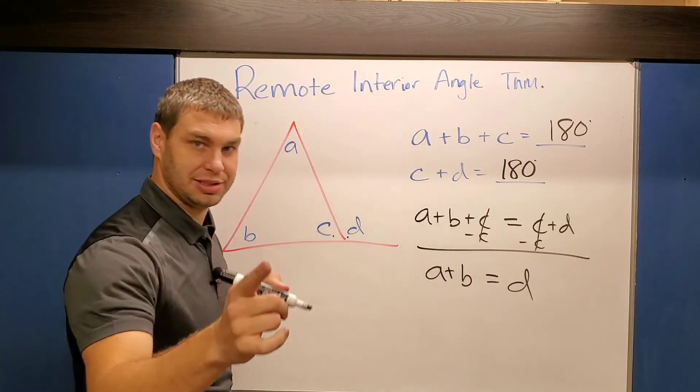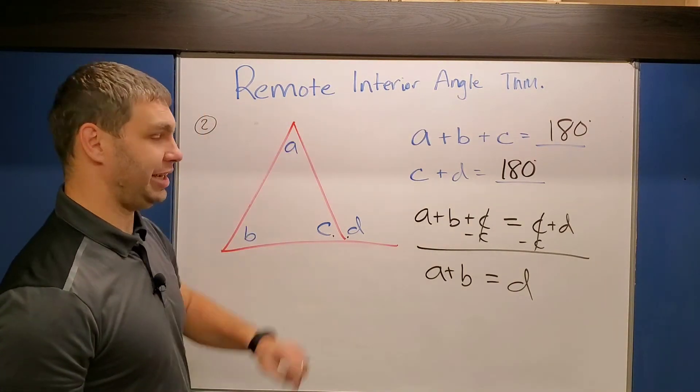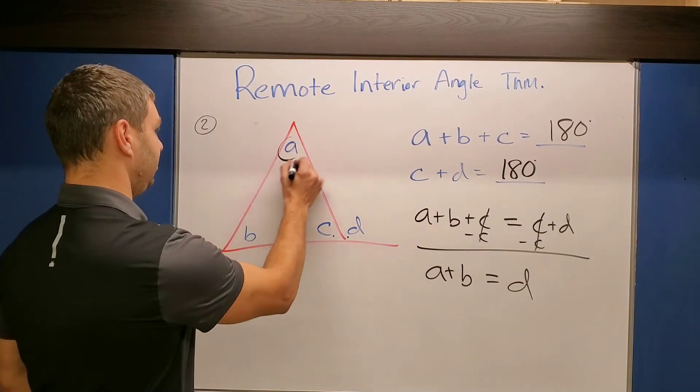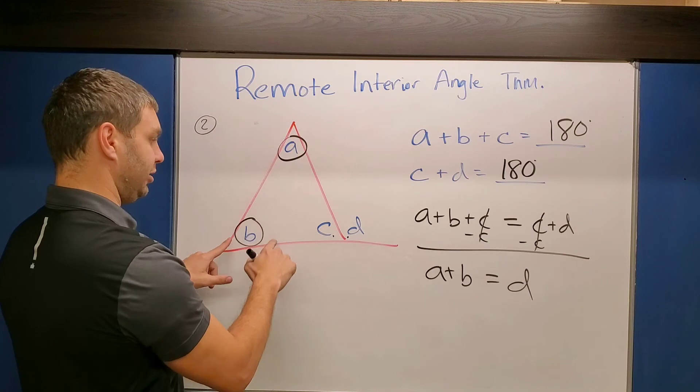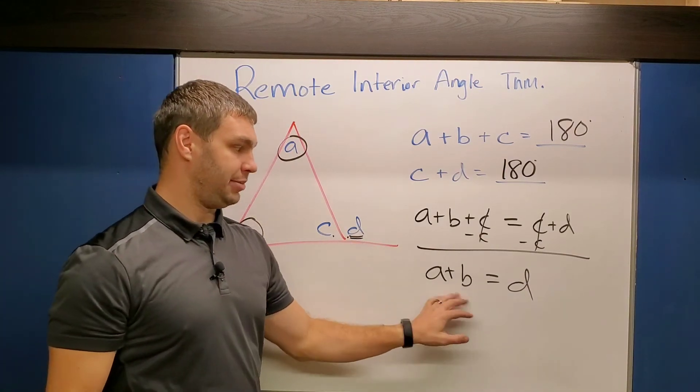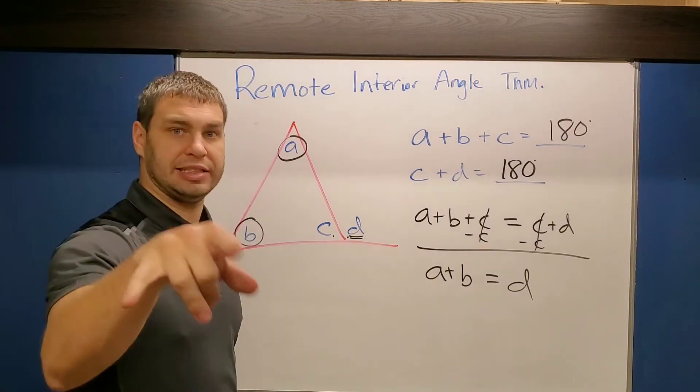Which is exactly what the remote interior angle theorem says. If I have two remote interior angles compared to my exterior angle, the sum is going to equal that exterior angle.